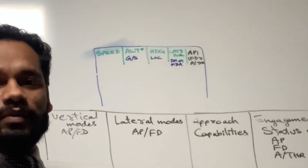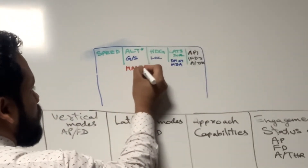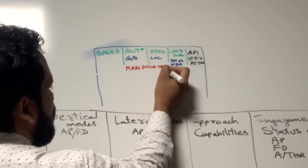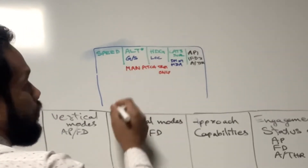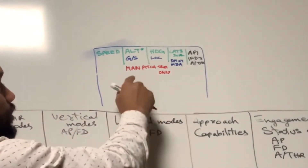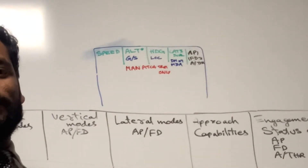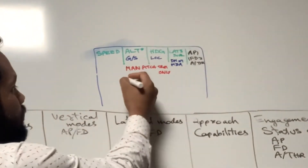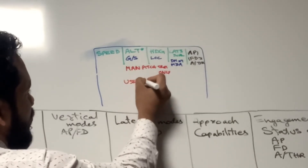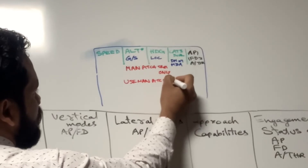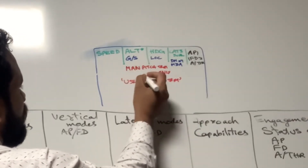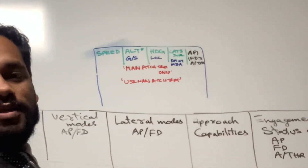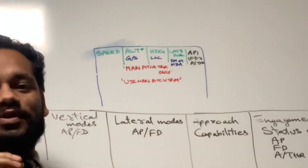For example, suppose there is a message from the flight control system. This message appears in red color and it flashes for nine seconds. There is also another message from the flight control system — like 'USE MAN PITCH TRIM.' This message appears in amber color, and whenever it appears in amber it flashes for nine seconds and then becomes steady.